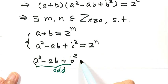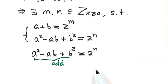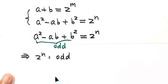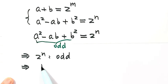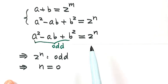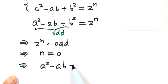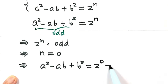Since A² − AB + B² equals 2 to the power of N and this expression is odd, 2 to the power of N must be odd. Therefore N equals 0, and substituting back, A² − AB + B² equals 2 to the power of 0, which equals 1.